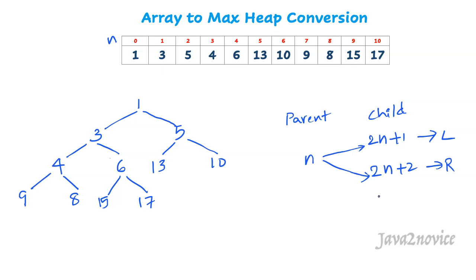Let's take an example. We will take the first element at index 0, which is the root node — so n equals 0. Applying the formula for the left child: 2×0+1 equals 1, and 3 is the element at index 1, so 3 is the left child for the root node. For the right child: 2×0+2 equals 2, and 5 is the element at index 2, so 5 is the right child for the root node.